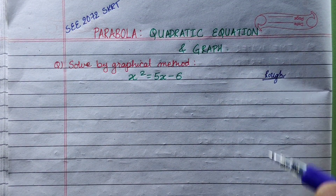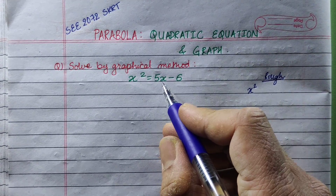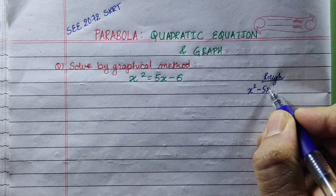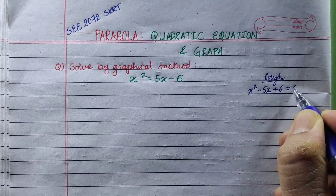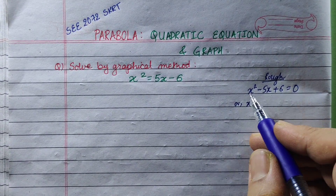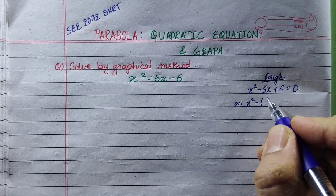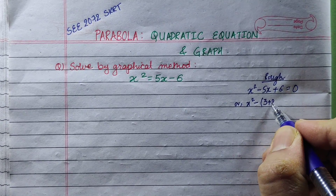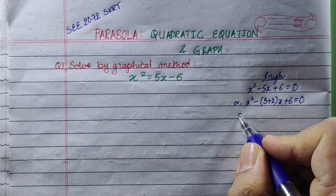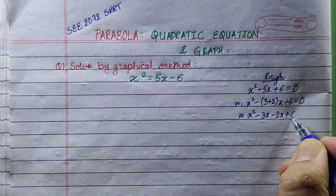So we have x squared minus 5x plus 6 on the left-hand side, minus 5x plus 6 is equal to 0. I factorize: x squared — multiply 6 and 5 — we get minus 3x minus 2x plus 6 is equal to 0.